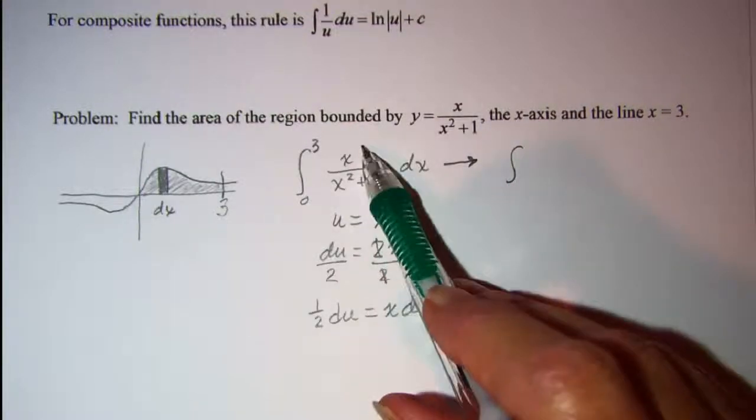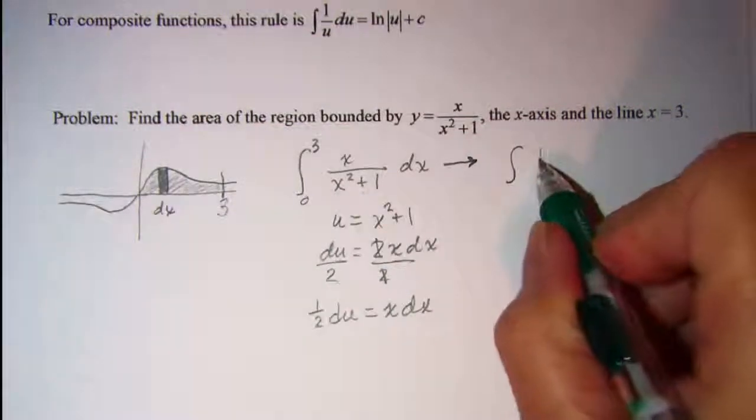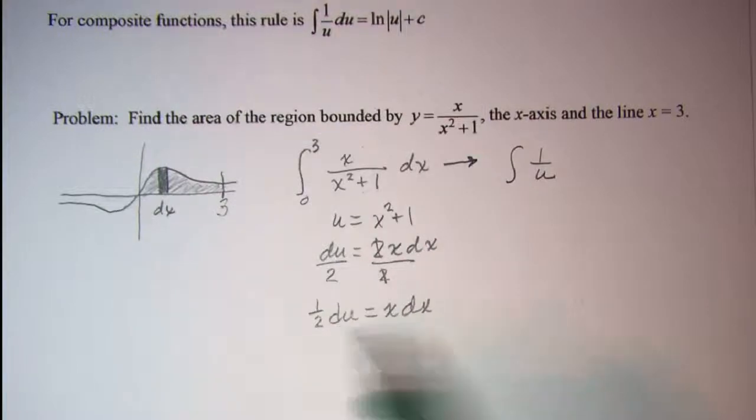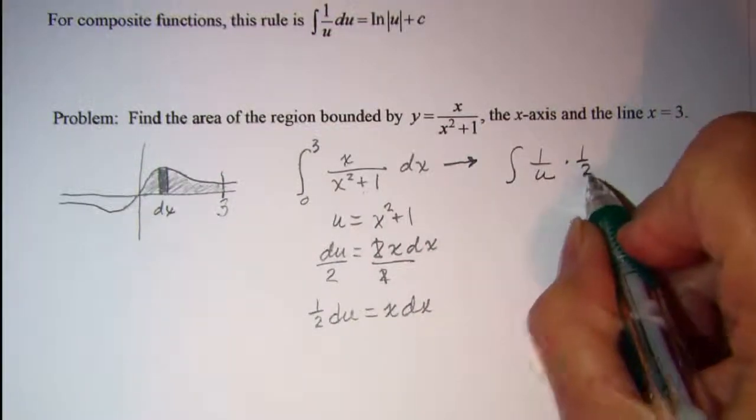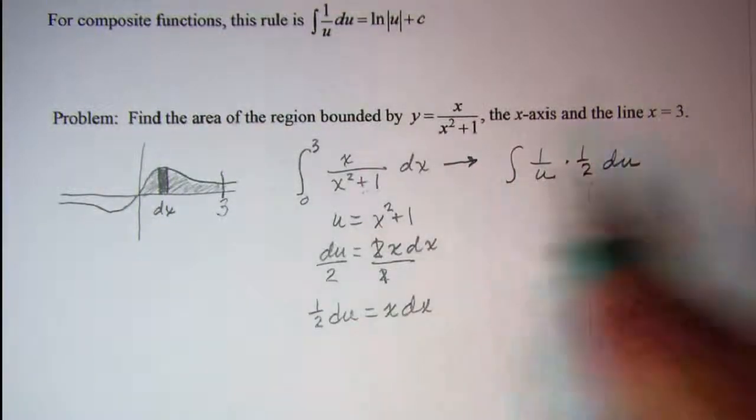So we have 1 over u times x times 1 half du. Now I can pull the 1 half in front.